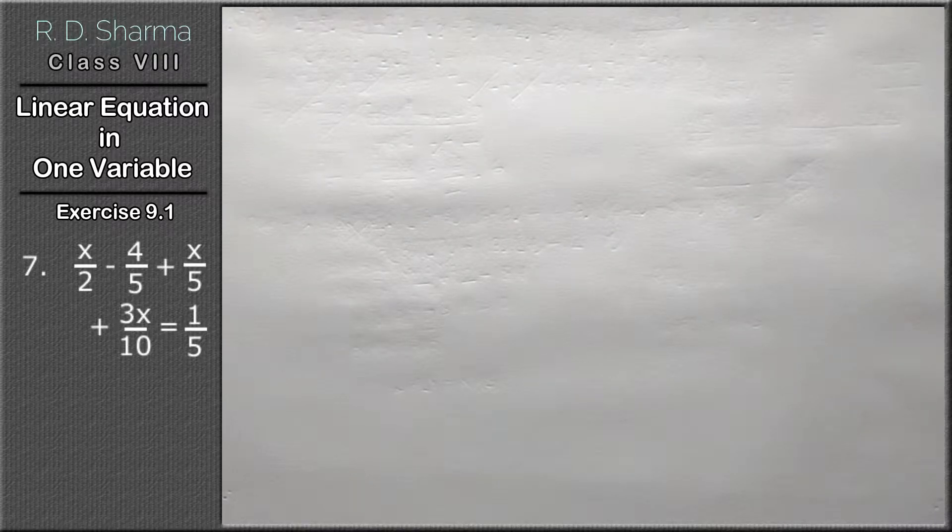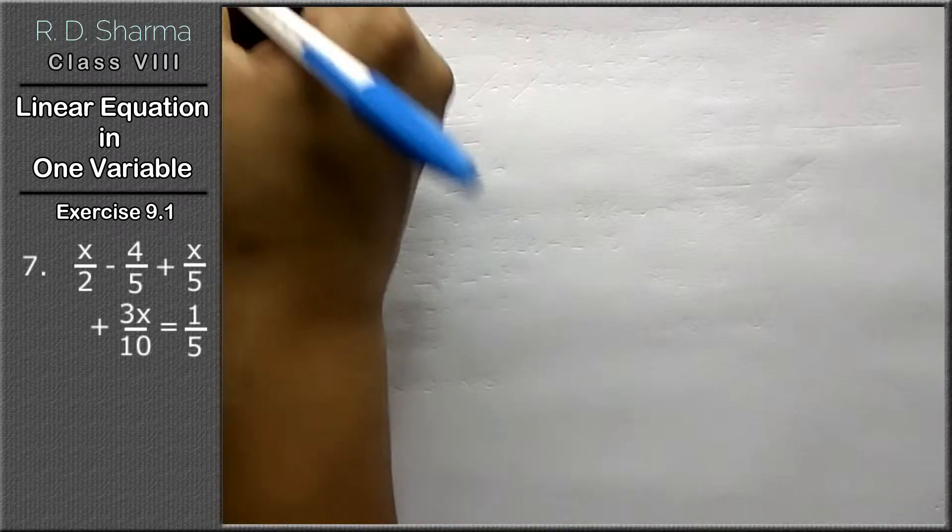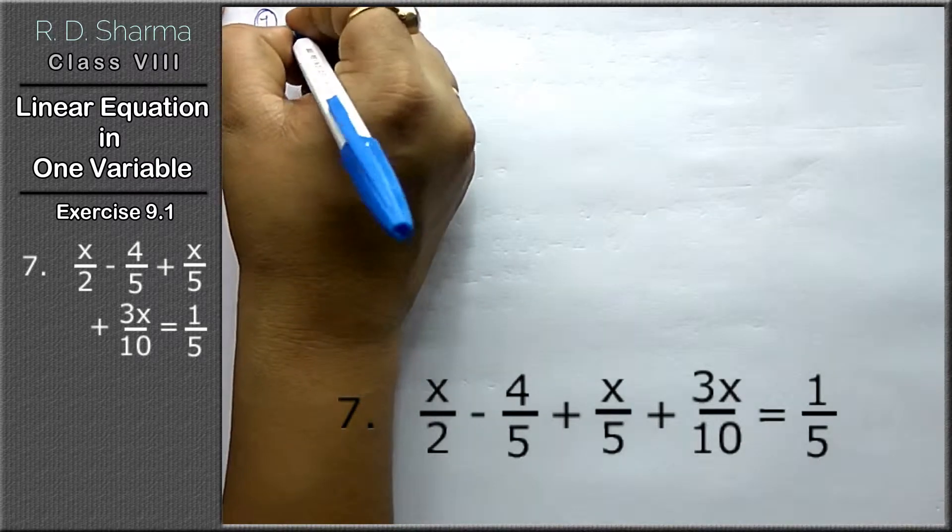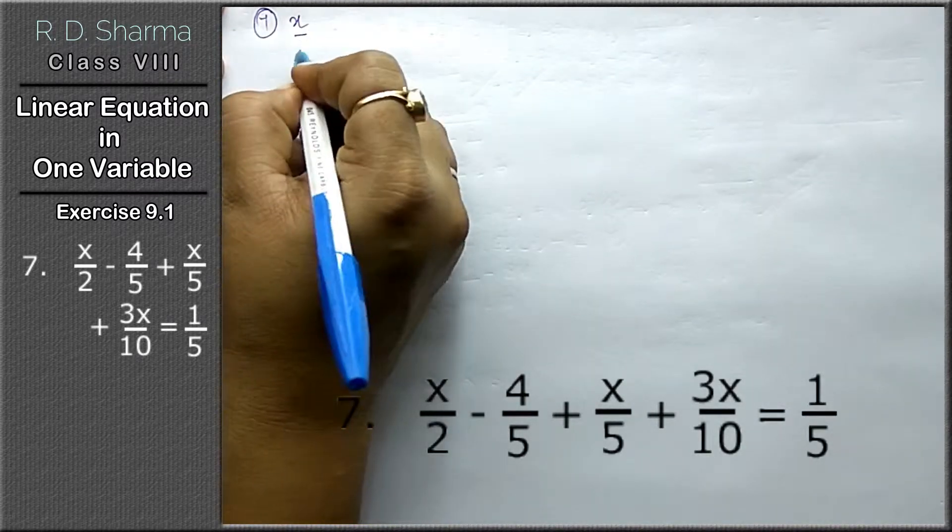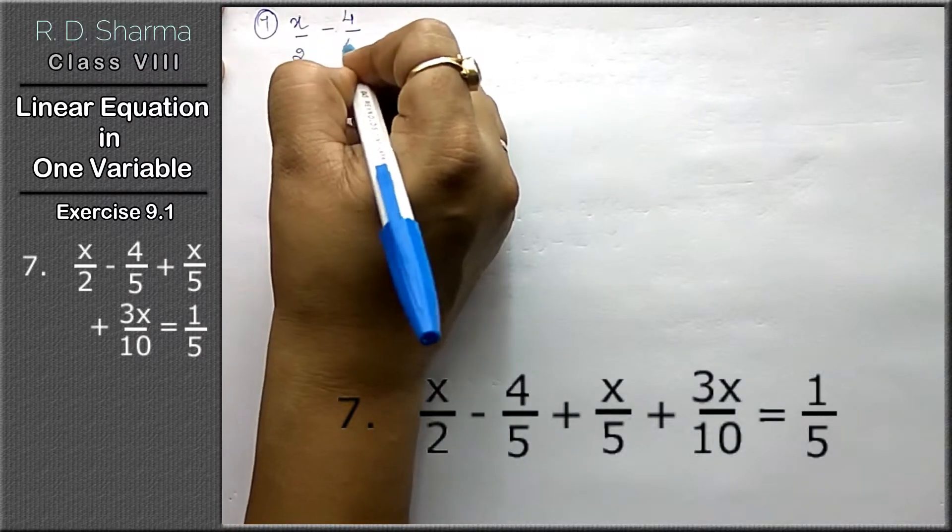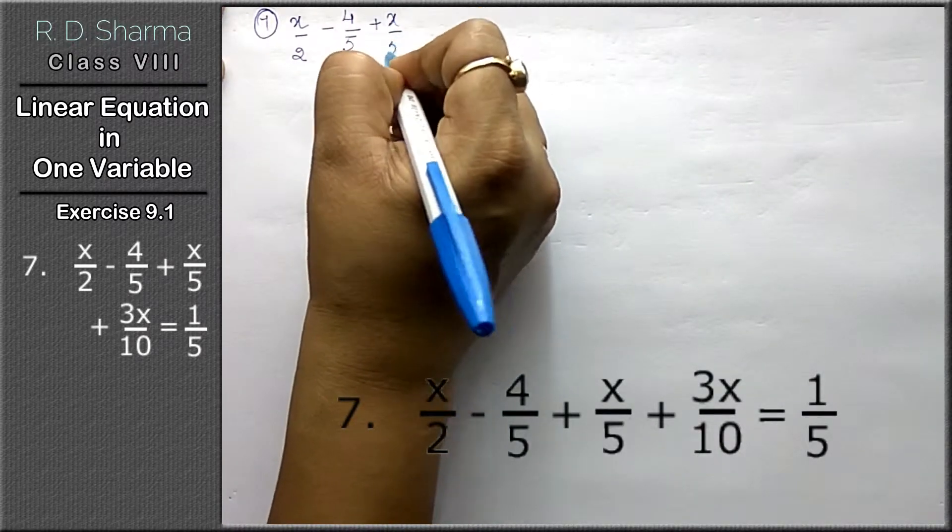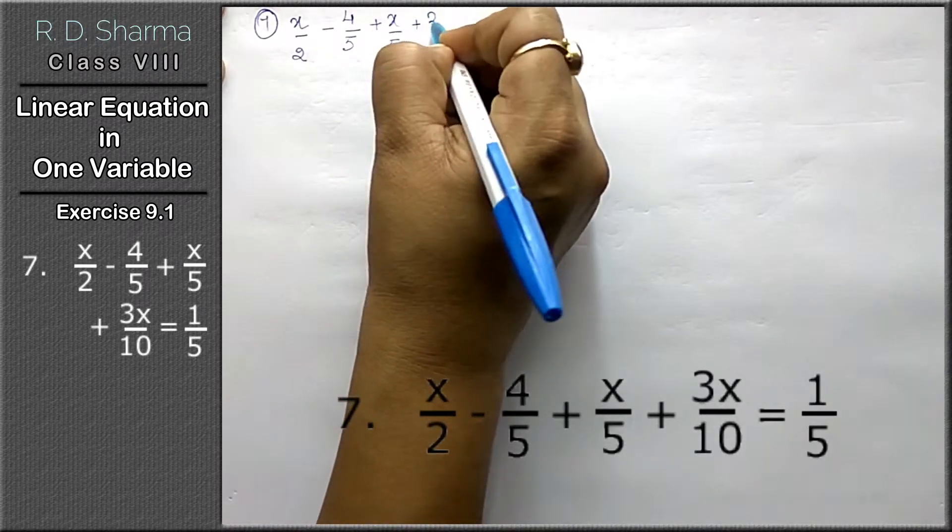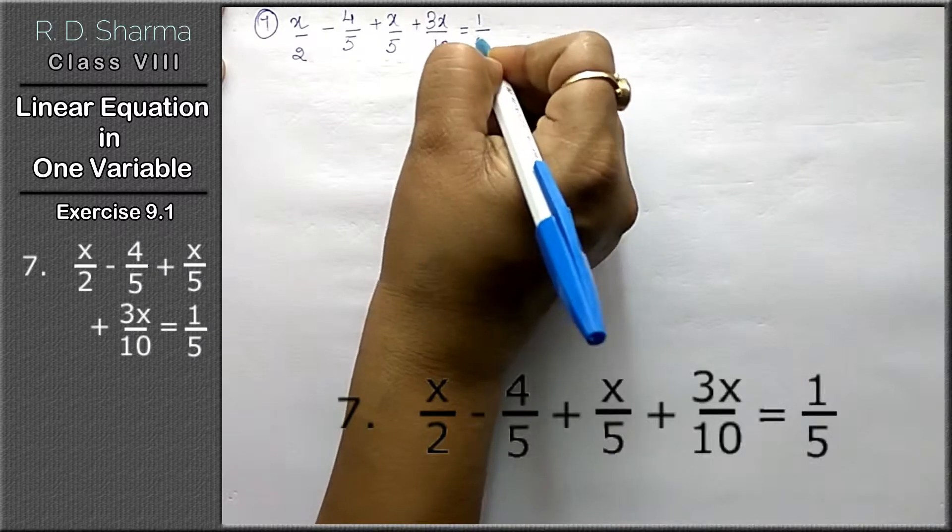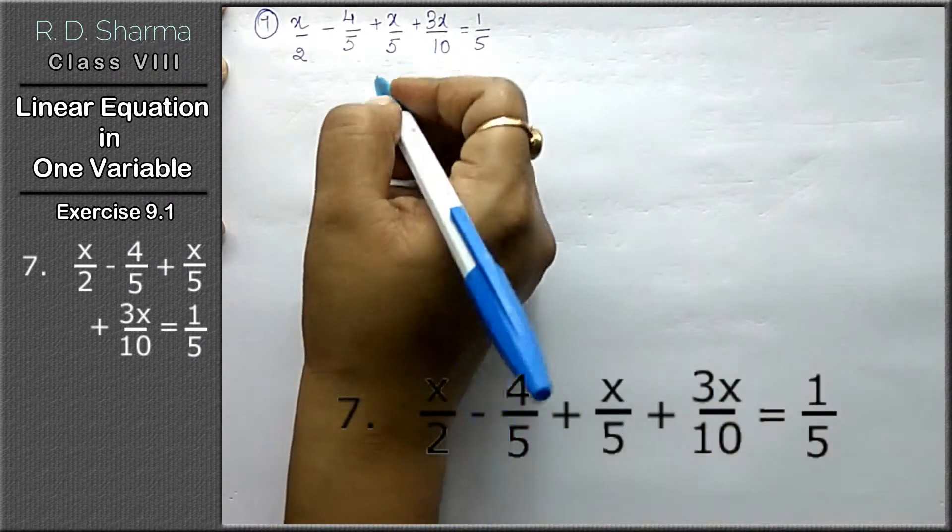Hello friends, welcome to Learn Maths. Today we will do chapter number 9, that is linear equation in one variable, question number 7. The seventh question is x upon 2 minus 4 upon 5 plus x upon 5 plus 3x upon 10 equals to 1 upon 5.